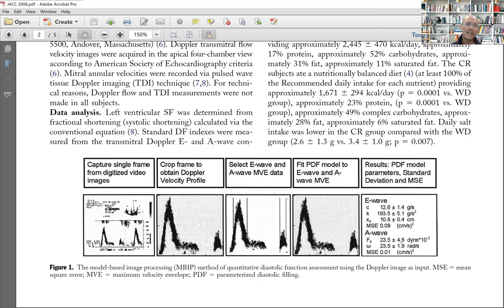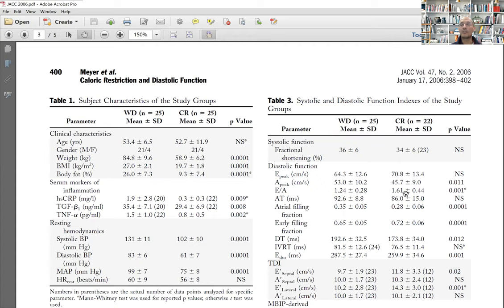As we get older, the E-wave diminishes because there is fibrosis and so this elastic suction-based filling gets less. In contrast, the active atrial part of the filling gets bigger. And again, in this paper, as you can see here, we show that the people on calorie restriction that are age and sex matched, they have a higher E-A ratio, they have a lower atrial filling fraction, and they have a higher early filling fraction of the ventricle.